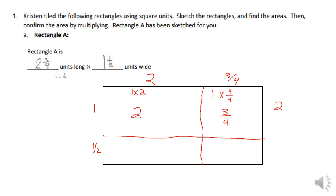This row right here is two and three-fourths already. The next part is one-half times two, which equals one-half times two over one, which equals two over two, so it's one whole. Our last piece is one-half times three-fourths. In class we've been having a hard time — people think they need a common denominator, but we're multiplying fractions, so you just multiply across: one times three is three, four times two is eight.